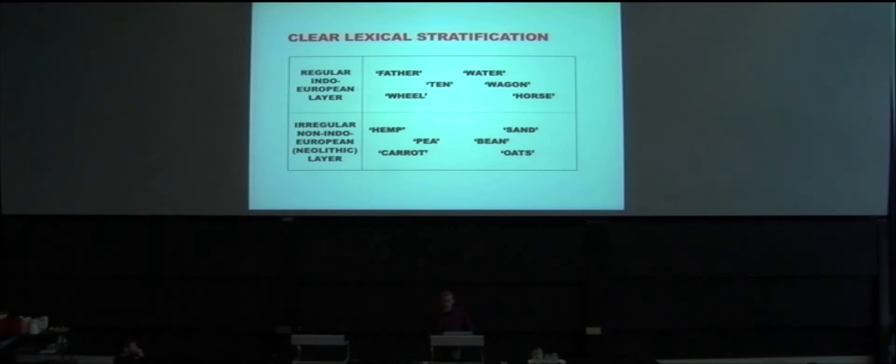With this, I think this is really the key to answering the question of the origin of the non-Indo-European component in Germanic: looking at the semantics. If you do this systematically, you can clearly distinguish between a regular Indo-European layer that consists of typically European words belonging to pastoralist culture: horses, wheels, wagons, the word for father, the numbers. And then you get a considerable, a strong layer of what I would say Neolithic or Neolithic words containing words like hemp, pea, beans, sand, oats, carrots, and things like that.